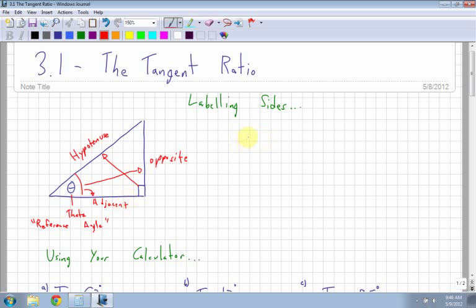And the tangent ratio of my angle, so of angle theta, is equal to my opposite over my adjacent. That's the ratio. Opposite side over my adjacent side. That's the ratio, that's your fraction, that's what you divide.